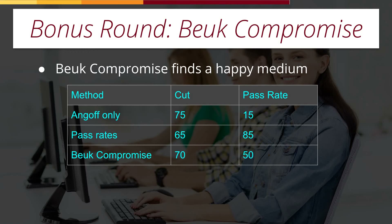We need to find some sort of happy medium, and that's what the BUK Compromise is exactly designed to do. The Angoff-only approach might provide a cut score of 75 and a pass rate of 15%. If you ask the SMEs, they think the pass rate should be 85%, which would lead to a cut score of 65. The BUK Compromise says the cut score should probably be somewhere in the middle — let's say, for simplicity, a cut score of 70, which would give a pass rate of about 50%. The actual calculations involved in computing the BUK are fairly complex, but the general concept is finding a compromise between the Angoff ratings only and what people expect to happen with pass rates.